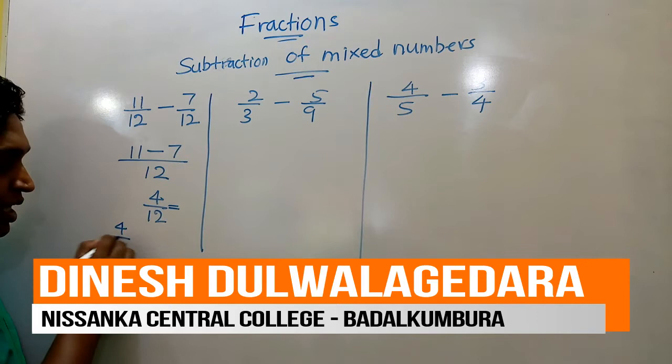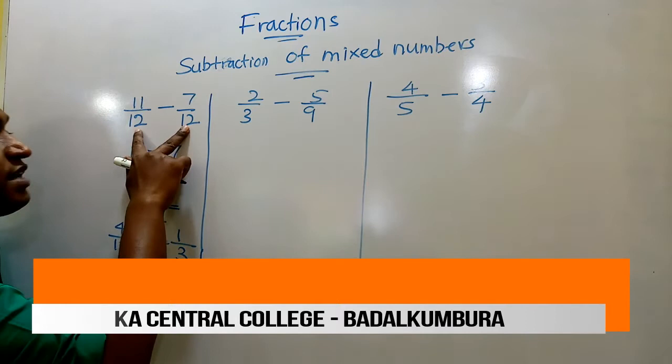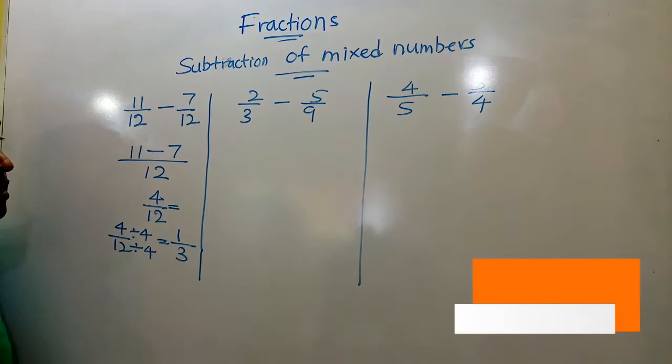Then children, 4 over 12 can be simplified. 4 and 12 are divisible by 4. So answer, 4 by 4 is 1, 12 by 4 is 3. So we can keep the answer in the simplest form. When denominators are equal, denominator is that one and numerators only subtracted.